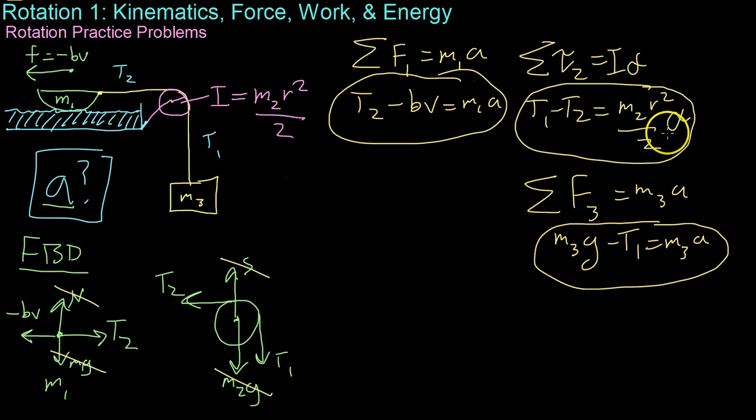Now, it should be noted that this alpha term is really just a over R. So, if we cancel that out and substitute in an a over R, we can cancel out one R term. From here, all we do is substitute in known values for T2 and T1 based on our force equations. So, we know that T1 is M3 G minus M3 a. And then we subtract T2, so minus M1 a minus BV. And all that equals M2 R over 2 times a.